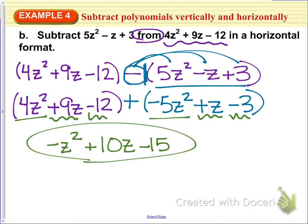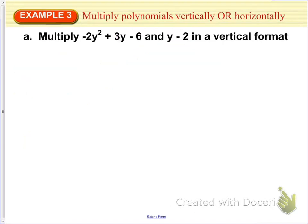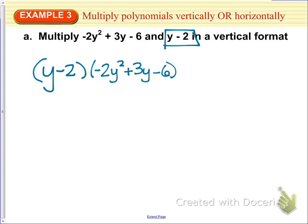All right, so multiplying polynomials in a vertical or horizontal format. I'm going to go ahead and just multiply them in a horizontal format again because this is what we're more used to when we see the distributive property. And I'm going to write the binomial first. It doesn't matter which order you go in. But I'm going to go ahead and write this as y minus 2 times negative 2y squared plus 3y minus 6.